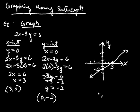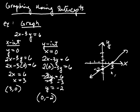And this is your line. So this is how you graph a line using intercepts — you use this procedure to find the intercepts, plot the points, and then graph the line through those two points. Let's try another one.